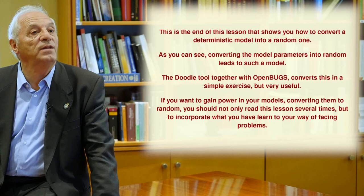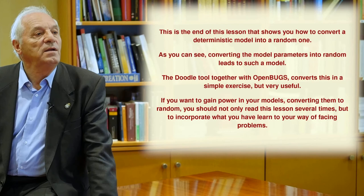And this is the end of this lesson that shows you how to convert a deterministic model into a random one. As you can see, converting the model parameters into random leads to such a model.